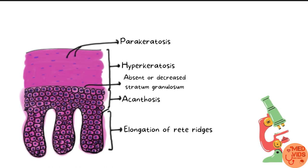Now let's talk histopathology — how the skin lesion appears under a microscope. There is parakeratosis, which means presence of nuclei in the stratum corneum, the topmost layer of skin. Ideally there should be no nuclei in this layer, but in psoriasis the main pathology is an increased rate of cell turnover in the epidermis, so young cells reach the top layer very early, still carrying their nucleus. Next is hyperkeratosis, meaning the stratum corneum is thickened. The stratum granulosum layer, normally present under the stratum corneum, will be absent or very small in psoriasis.